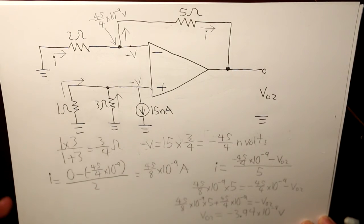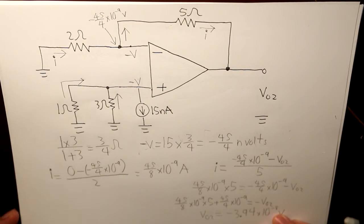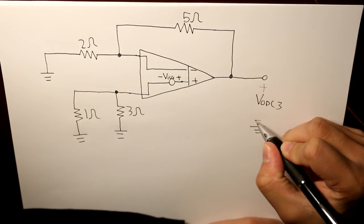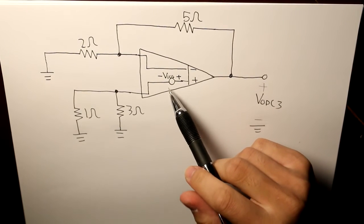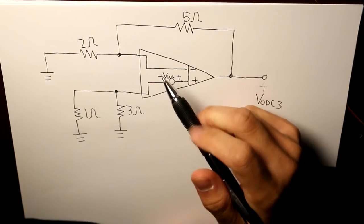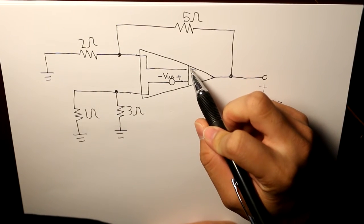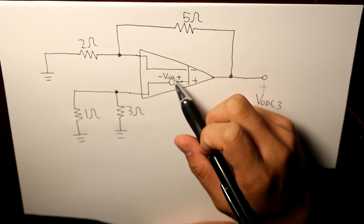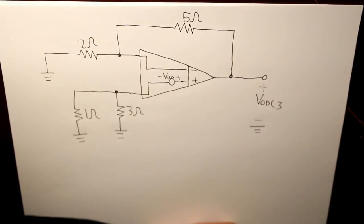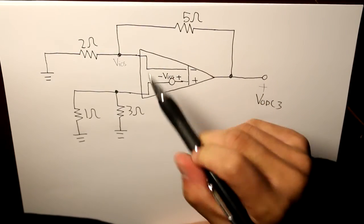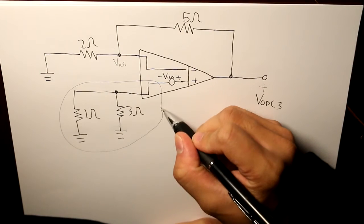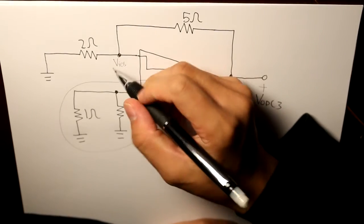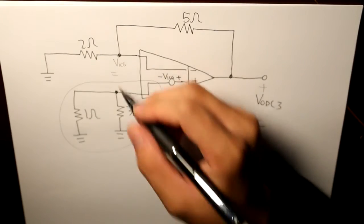So that is our biased current entering through the positive terminal — as you can tell it is a lot more complicated than the first one. Now moving on we have our offset voltage. This time our offset voltage is located inside the op amp, and we can see that in the positive input terminal it is aligned with the higher potential of the offset voltage. So VIOS, as I want to remind you, is equal to 5 millivolts.